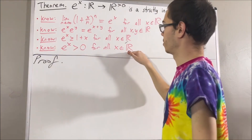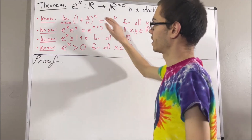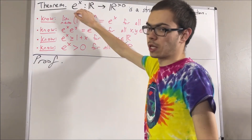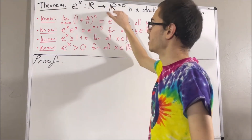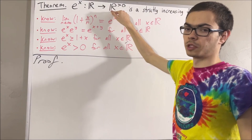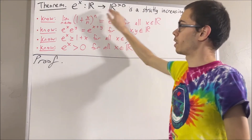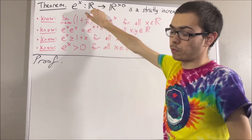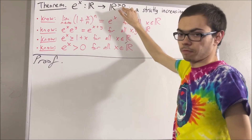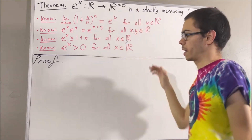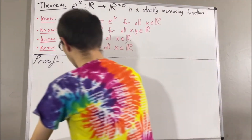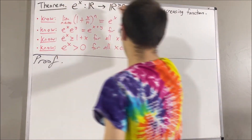This result tells us that the real exponential maps into the positive real numbers. For every real number x, e to the x is greater than 0. And now, let's get into proving this theorem.